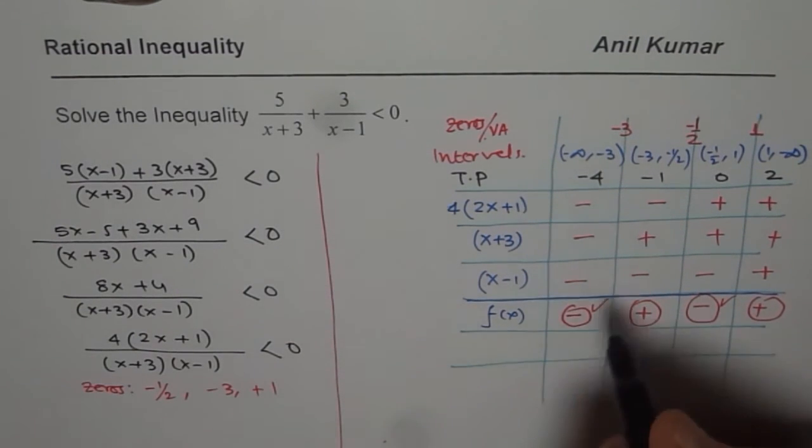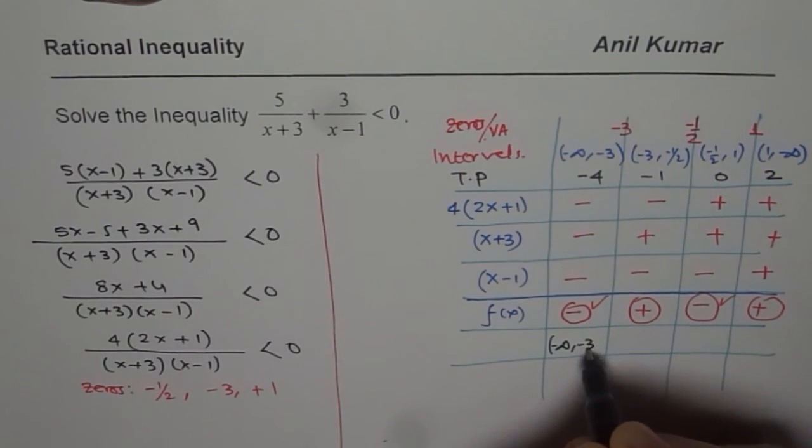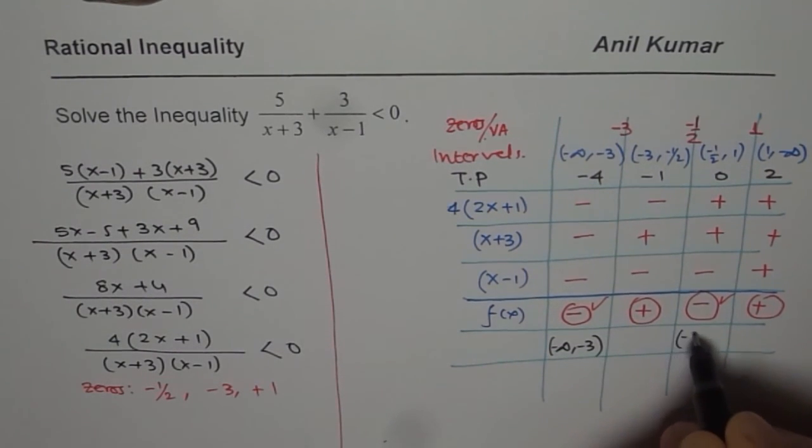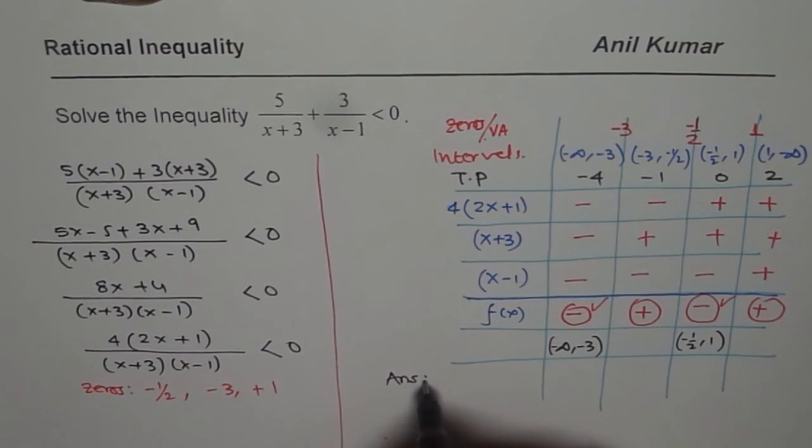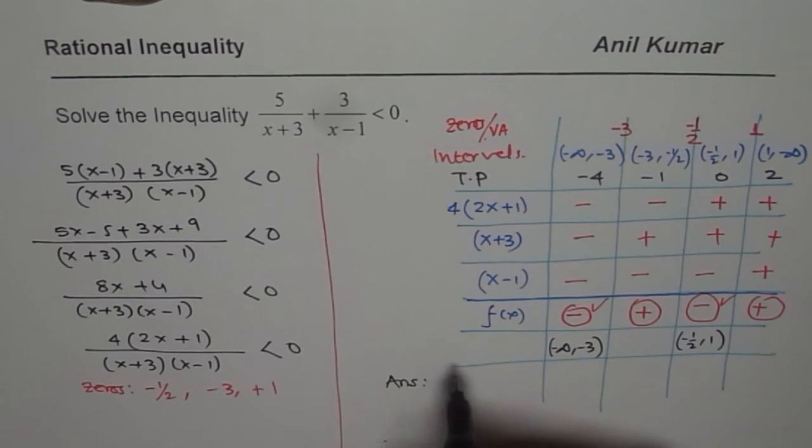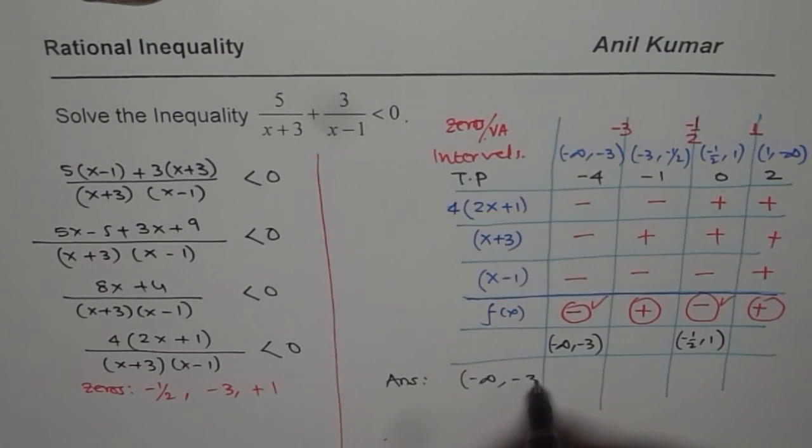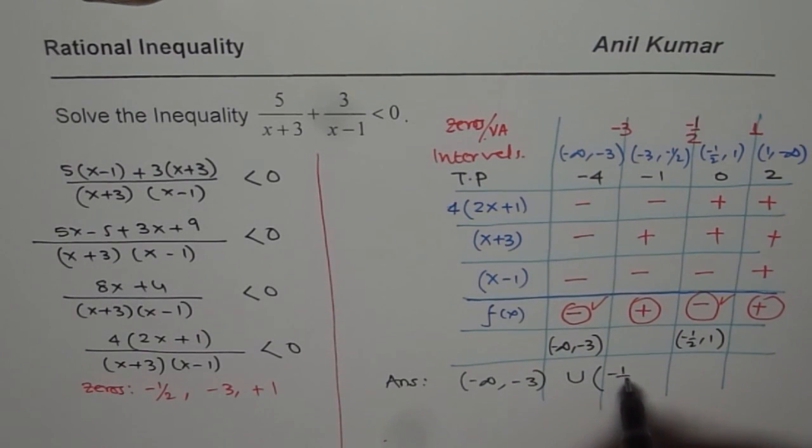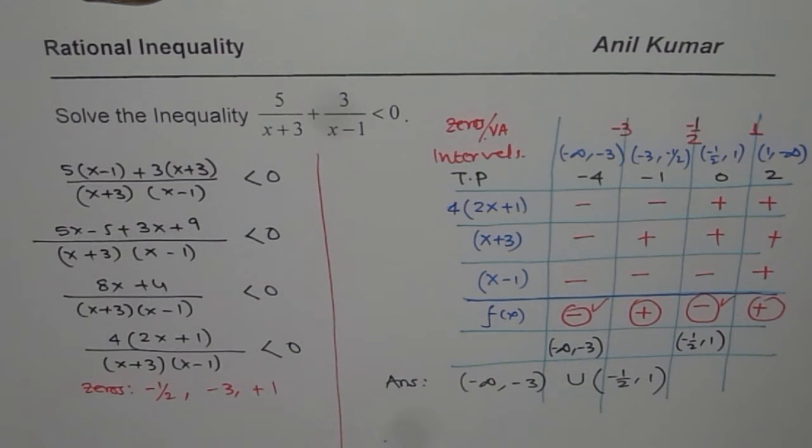We are looking for less than 0, which means these are our solutions. And now we can write down the solutions, which is between minus infinity to minus 3 and from minus half to 1. We get our answer that this inequality is true in the domain minus infinity to minus 3 union minus half to 1. That is how you should be solving inequalities.